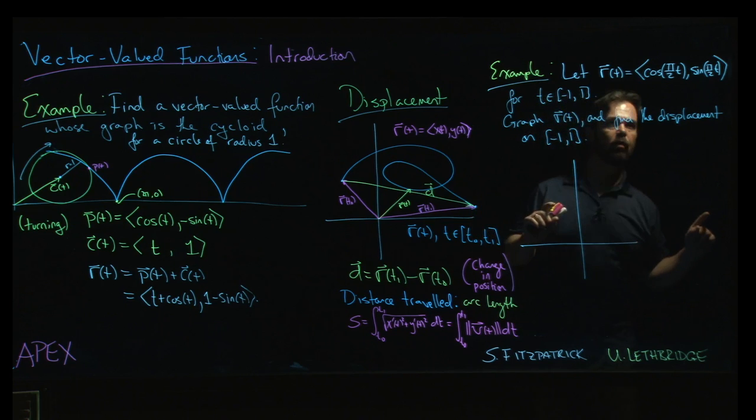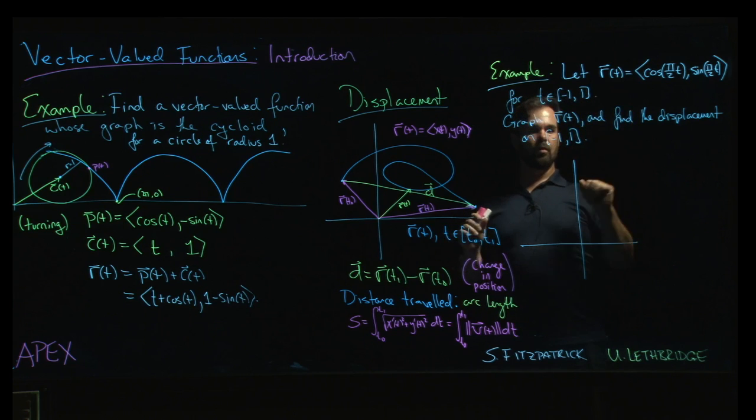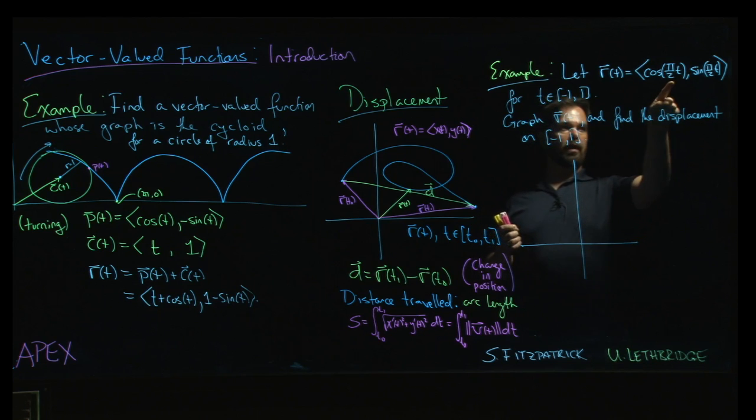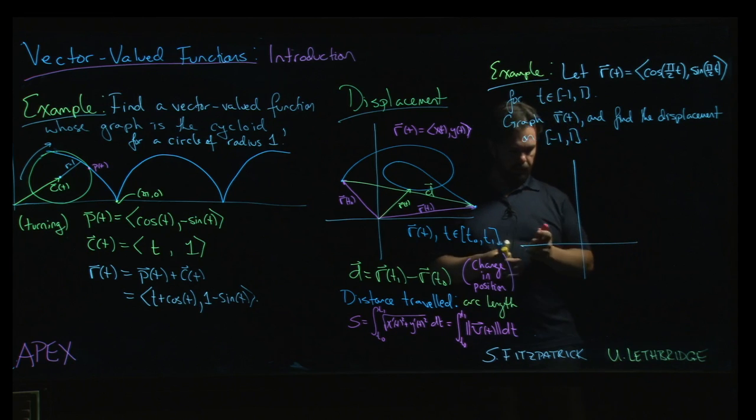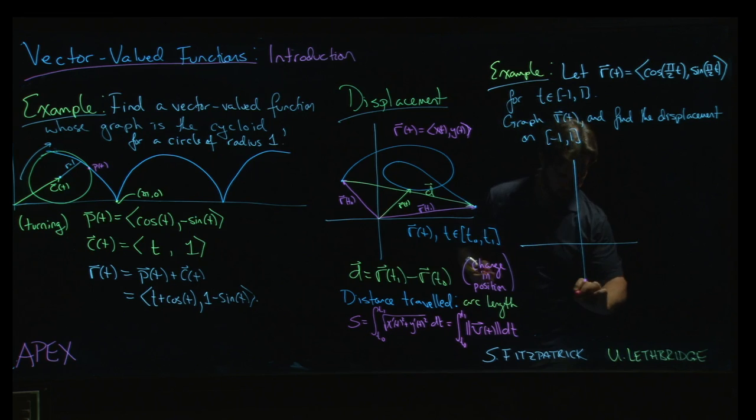Right, t is going to go from minus 1 to 1. Let's see when t is equal to minus 1 where we are. We're at cosine of minus pi over 2, that's zero. We're at sine of minus pi over 2, which is minus 1, so we actually start down here.